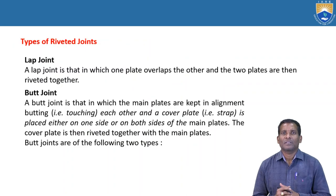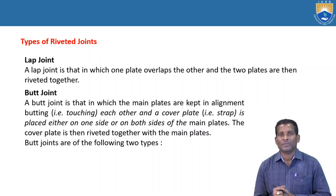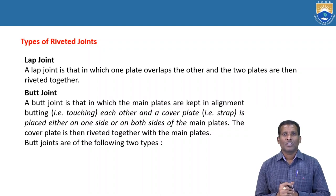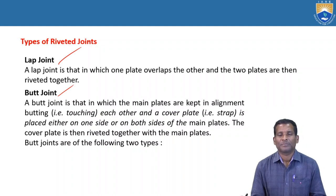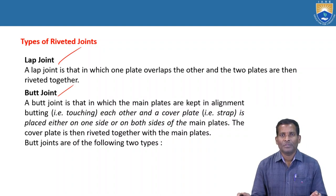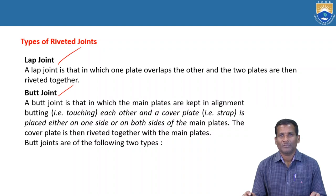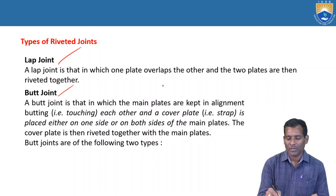Next are the types of rivet joints. Rivet joints are generally of two types. The main classification is: one is a lap joint and another one is a butt joint. In a lap joint, one plate overlaps the other plate, and then the two plates are riveted together.